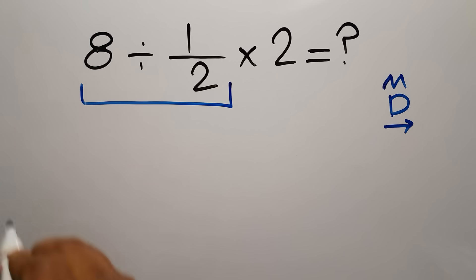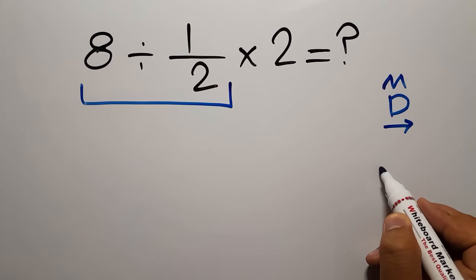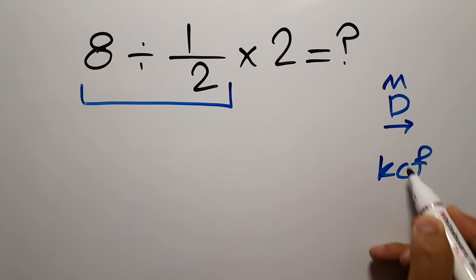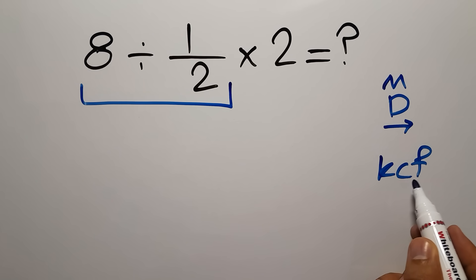First this division, then this multiplication. 8 divided by 1 over 2.